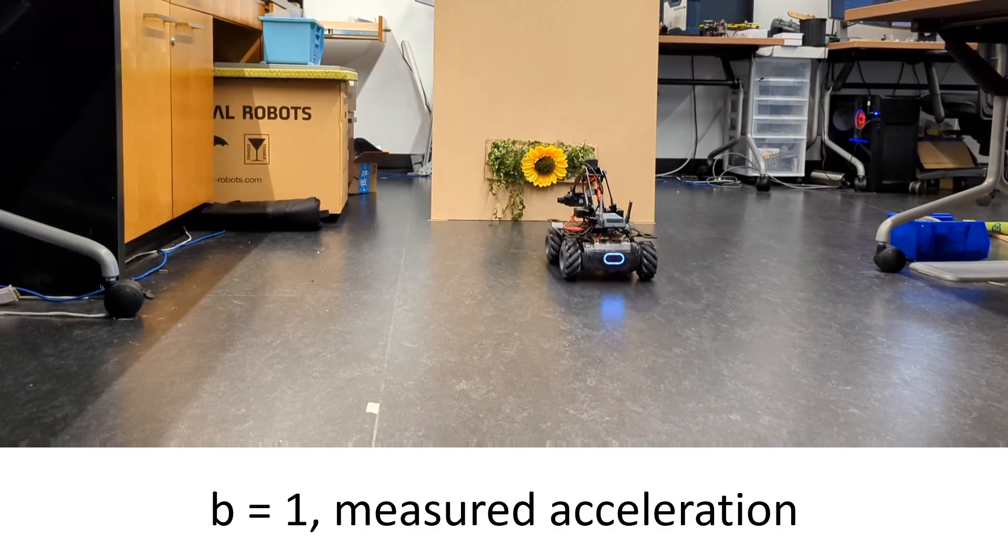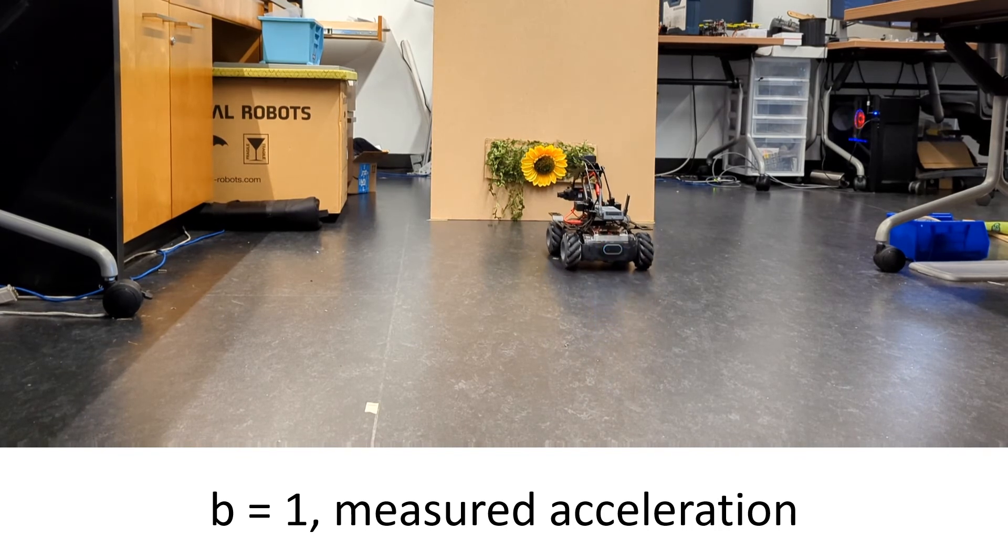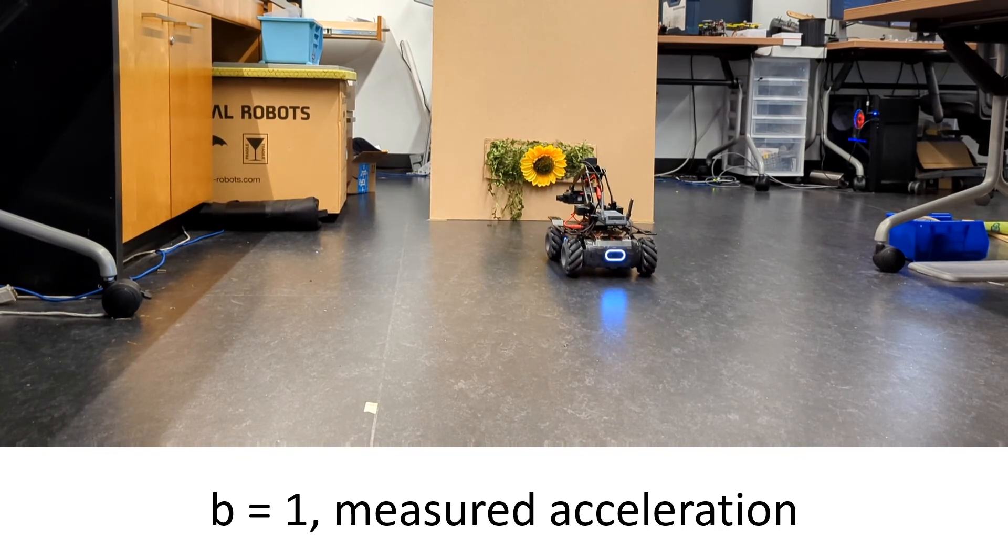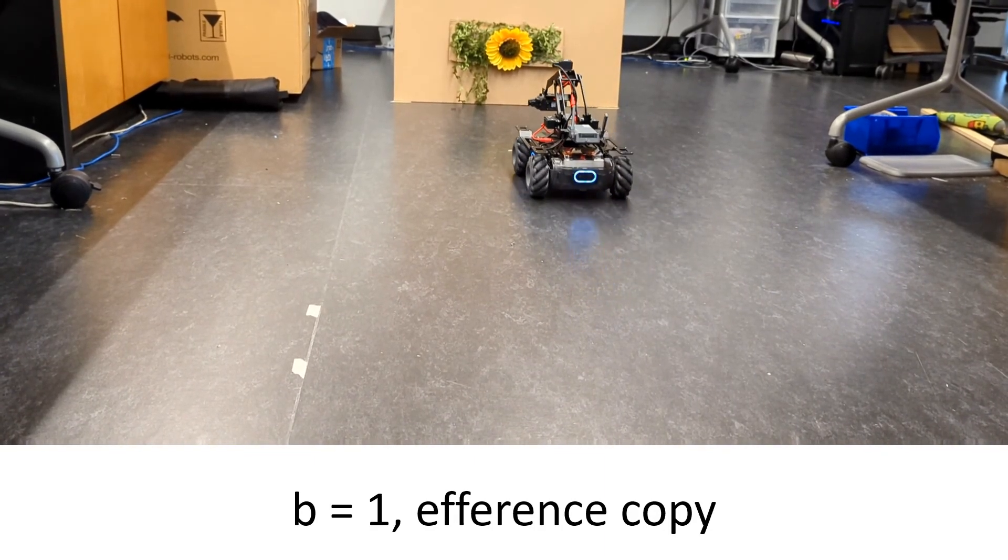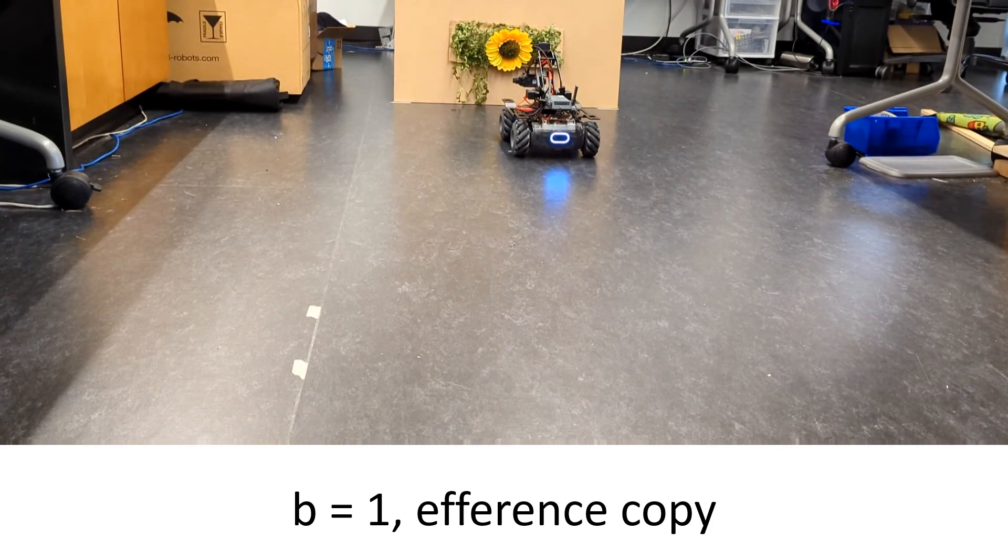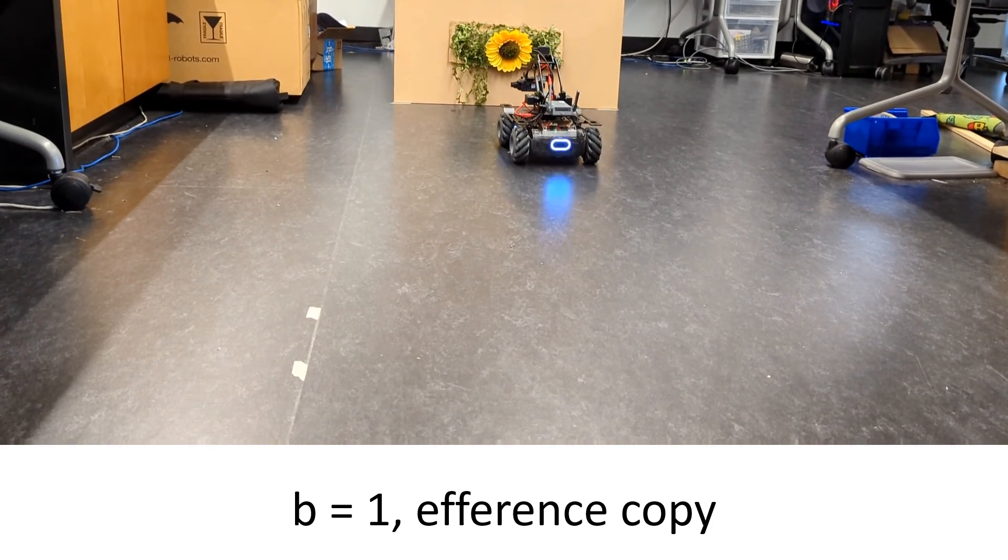We test this property by deploying a robot in a visual servoing task. Its goal is to reach a fixed distance from the target. Initially, the control gains are tuned with unity gain between the control signal and the command sent to the motors. Both methods cause the robot to approach the target in a stable manner.